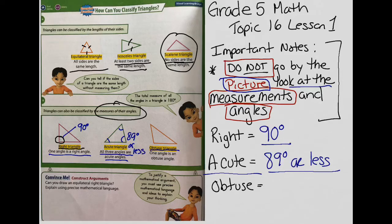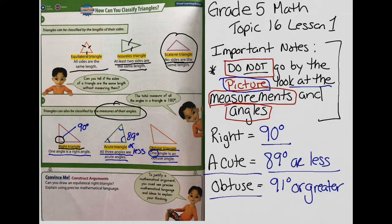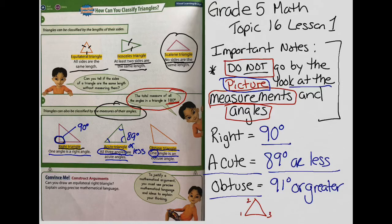Now we have an obtuse triangle — one angle is an obtuse angle, meaning it's 91 degrees or greater, and that's only going to be one angle. Notice the acute triangle has all three angles less than 90 degrees, and the right triangle has only one 90-degree angle. One other important part to note is that the total measure of all the angles in a triangle is 180 degrees. When I add angle one plus angle two plus angle three, that has to give me 180 degrees to be a valid triangle — no more, no less.